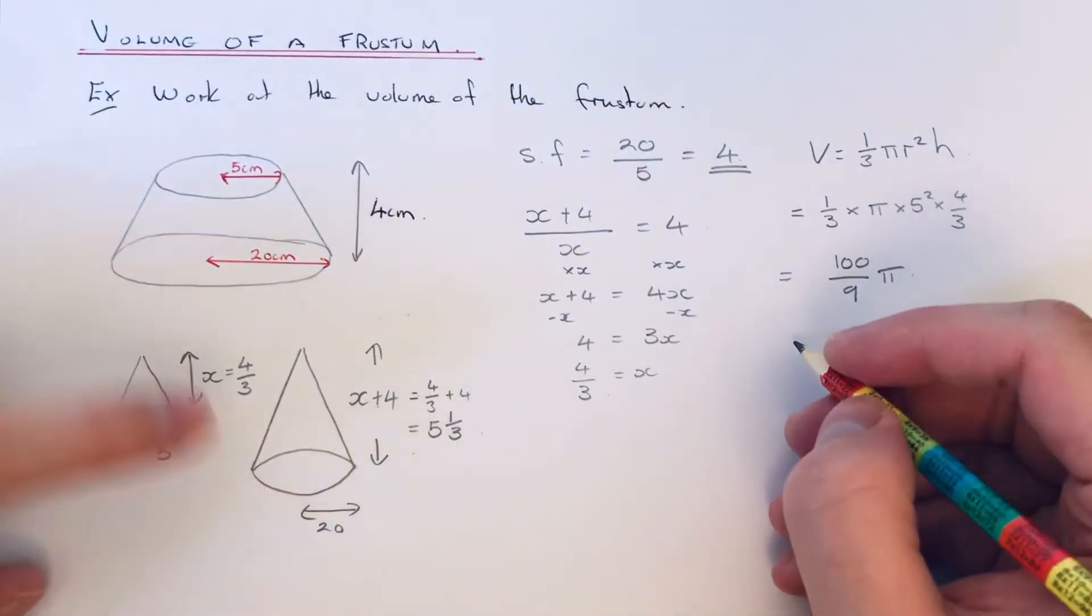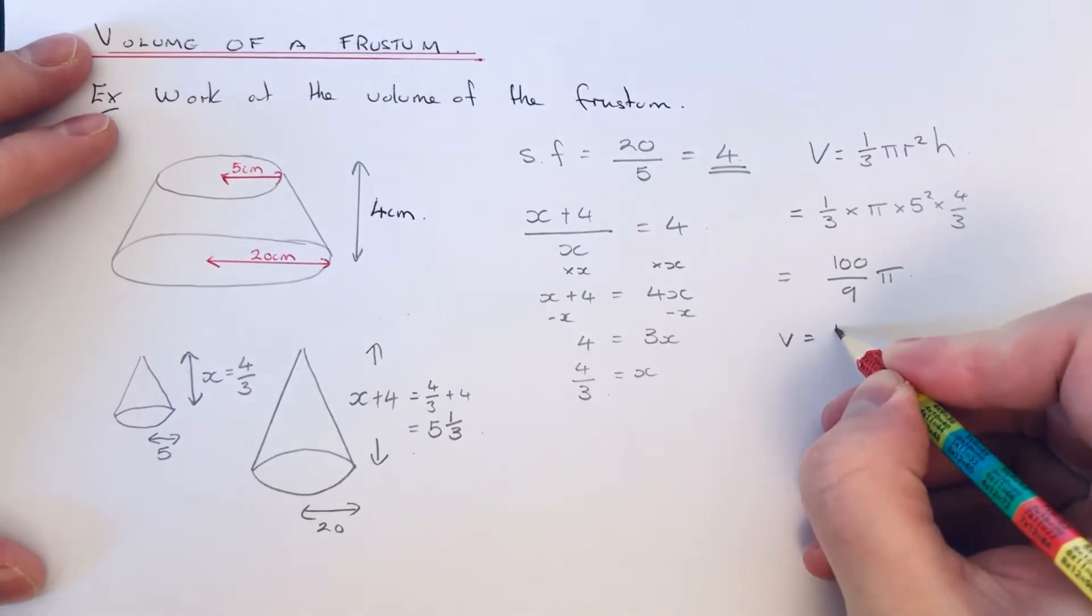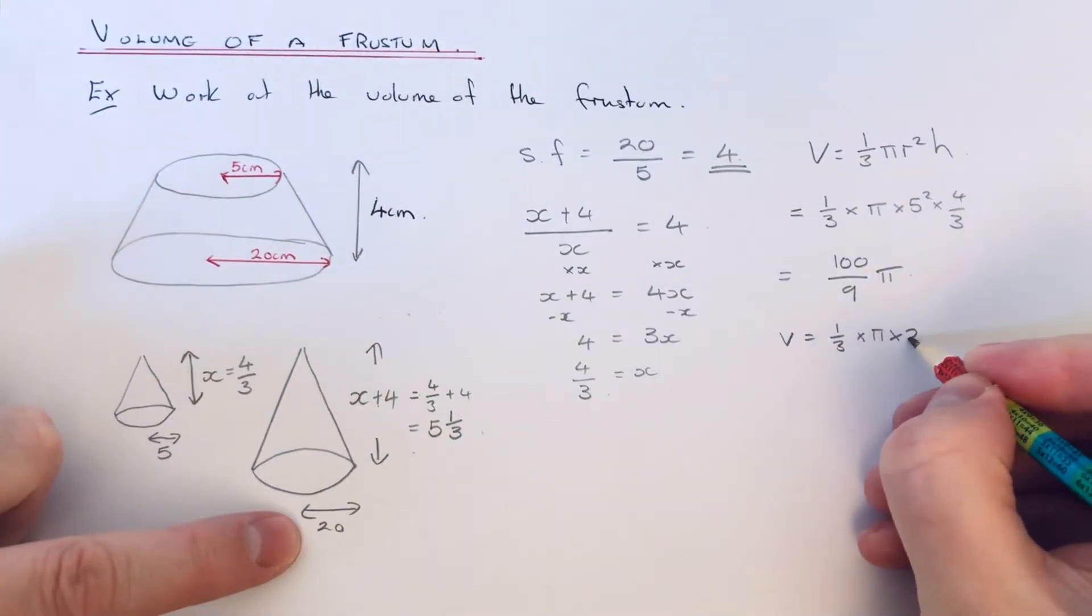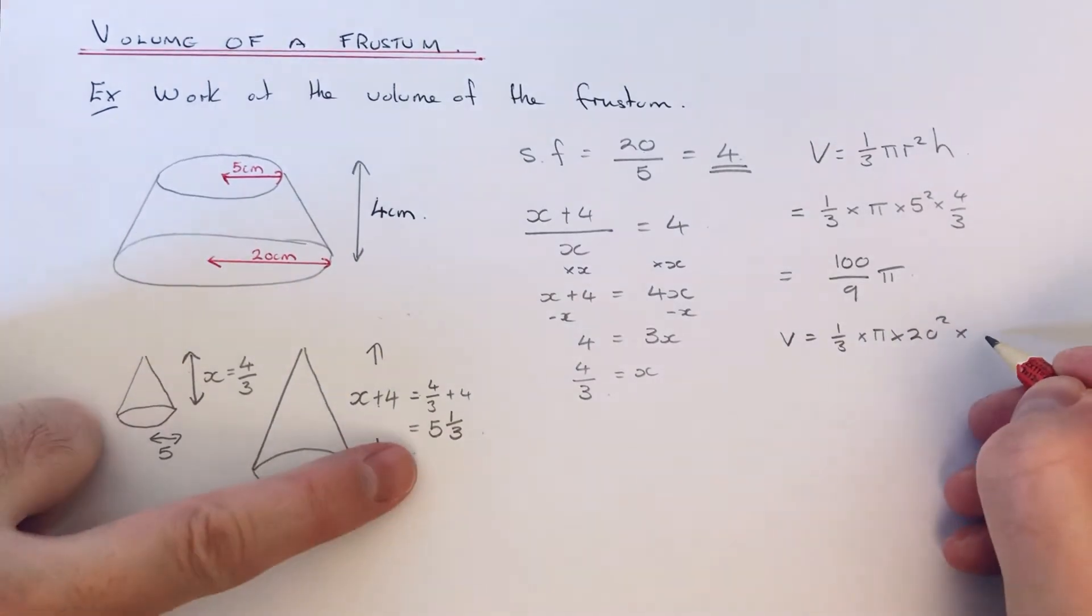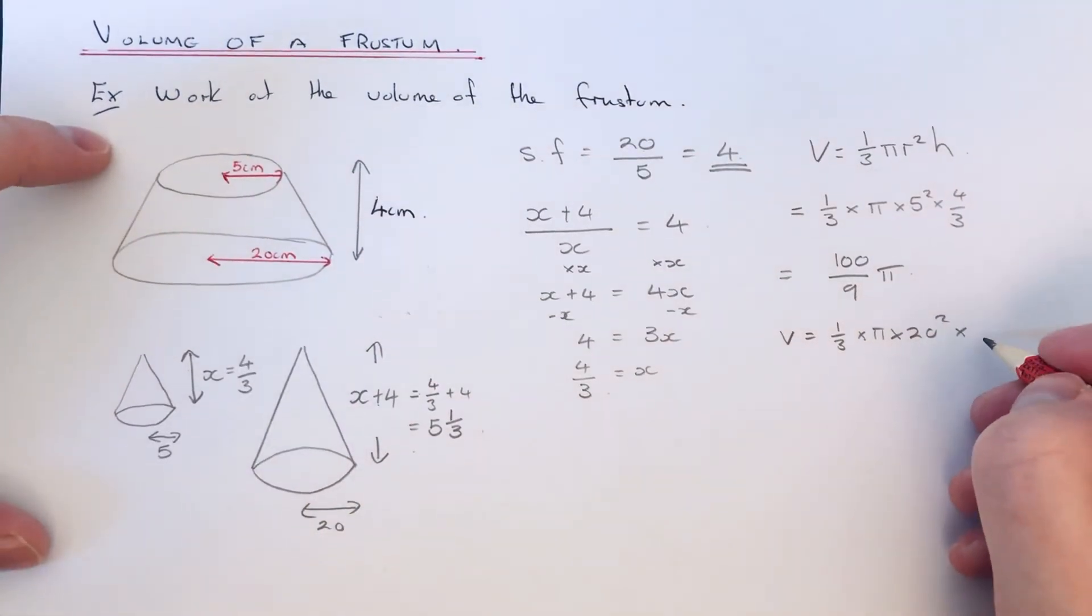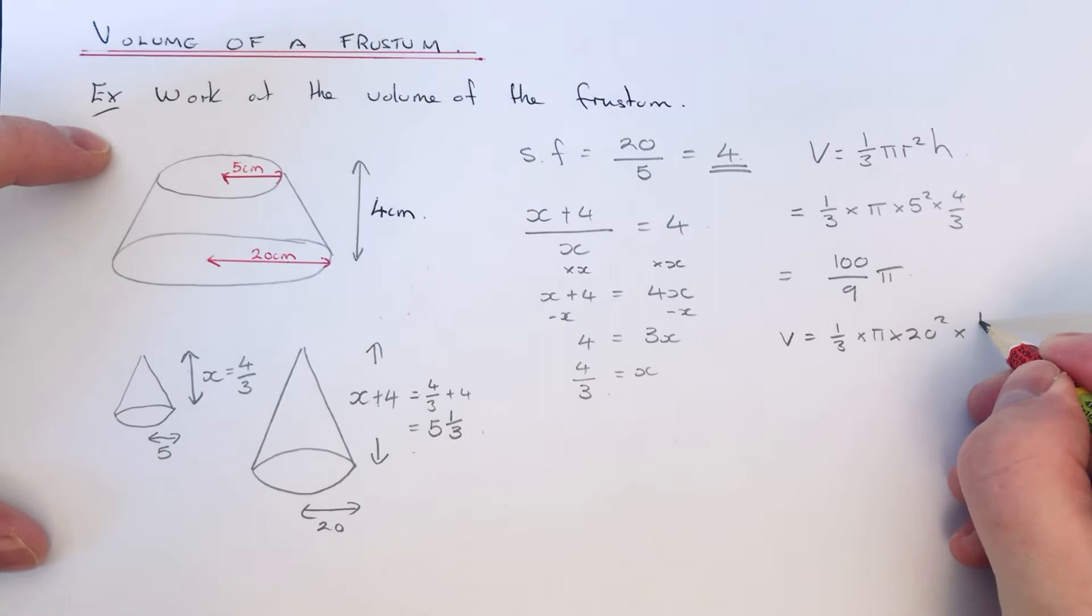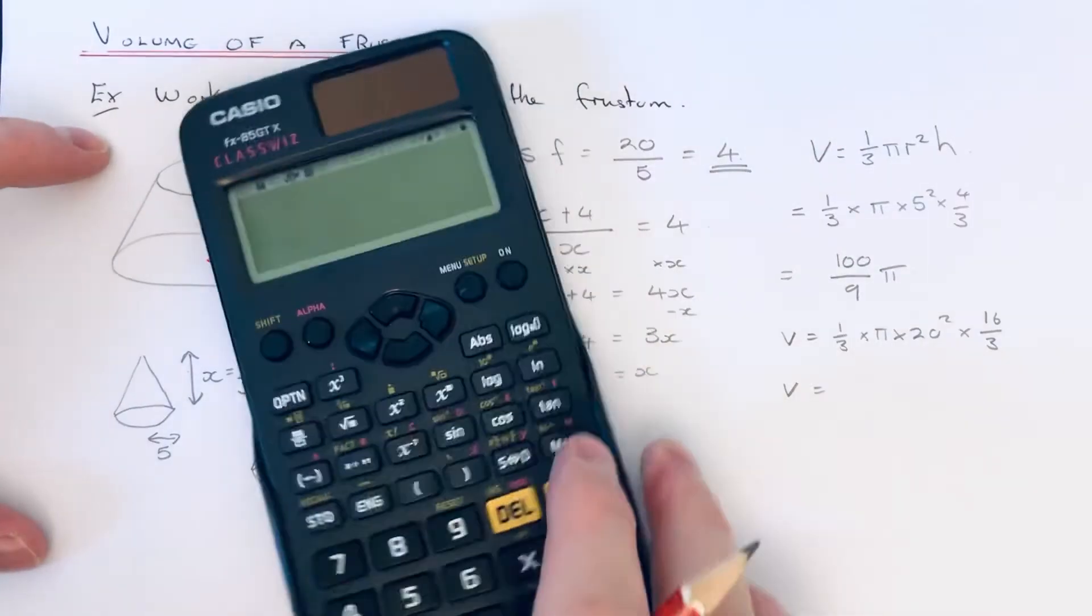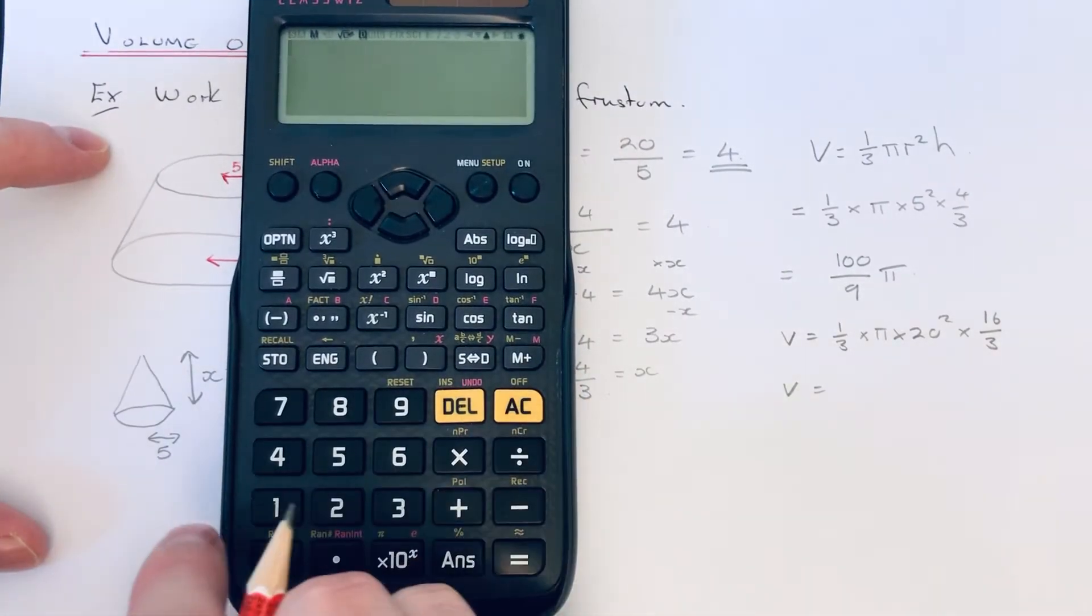So we just need to now work out the volume of the large cone. This time it would be a third times pi times 20 squared times 5 and a third. Times 5 and a third is the same as 16 thirds. So if we just type that in on the calculator.